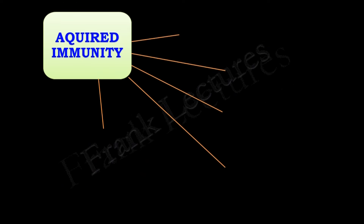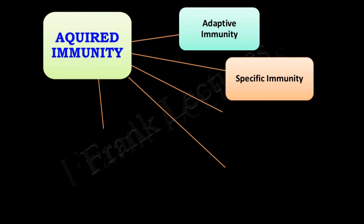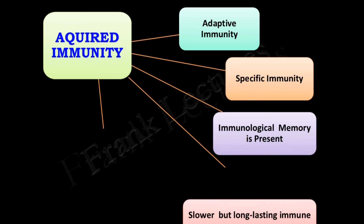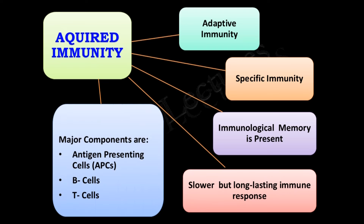Summary of acquired immunity: also known as adaptive immunity. It is specific immunity. Immunological memory is present. It is a slower but long-lasting immune response. Main components are antigen presenting cells, B cells, and T cells.